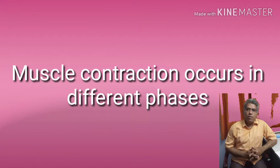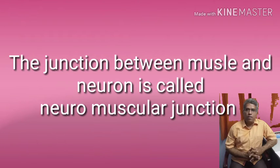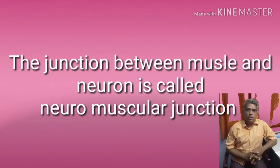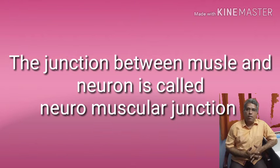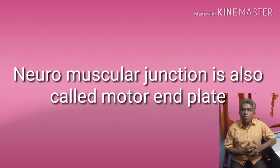During muscle contraction, the muscle should get excited. The first step is excitation of the muscle. The second step is formation of cross bridges. The third step is power stroke, followed by recovery stroke, and then muscle relaxation. Let us see how these reactions occur one by one.